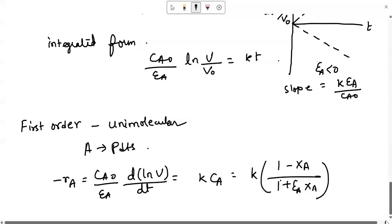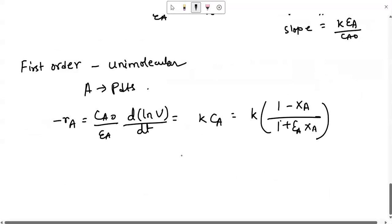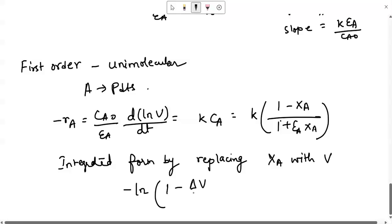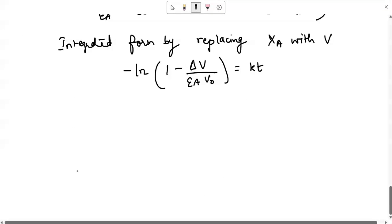Now if you get the integrated form by replacing XA with V, then you can write the integrated form. By replacing XA with V we will get minus ln(1 - delta V by epsilon A V0) equals to KT. So in this case, you will need a semi-logarithmic plot. On your Y-axis you have minus ln(1 - delta V by epsilon A V0) and on your X-axis you have time. You will make the best fit plot of your data points and the slope is K.